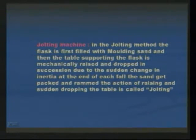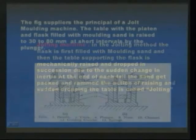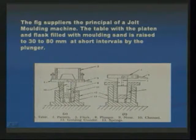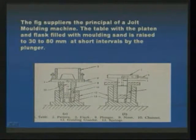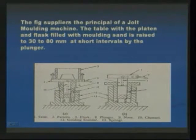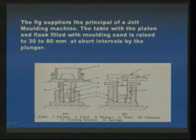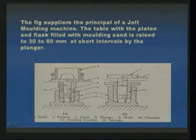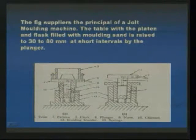Due to the sudden change in inertia at the end of each fall, the sand gets packed. This figure explains the complete details of a jolting machine. In the case of jolting, the flask is placed here. The components are: table, pattern, flask, plunger, nose, channel, and guiding girder.